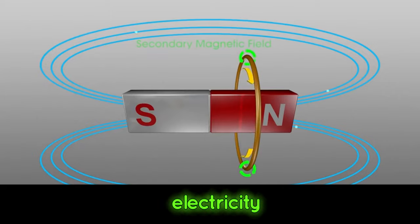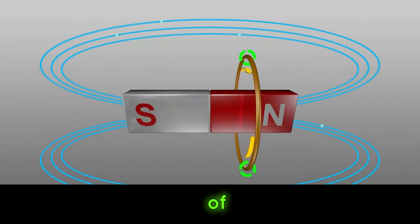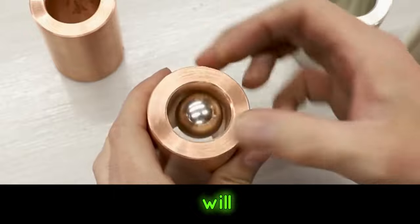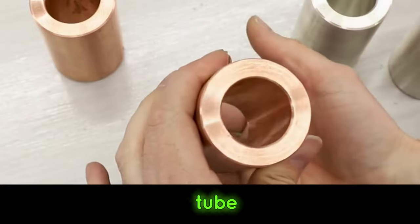In fact, this is a visual representation of electromagnetic induction and eddy current effect. The magnet will fall very slowly in the copper tube. Here's why.